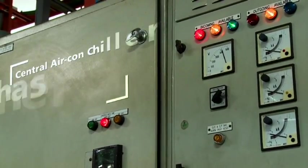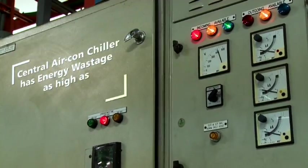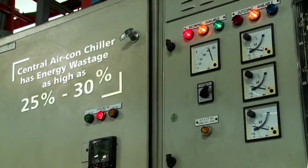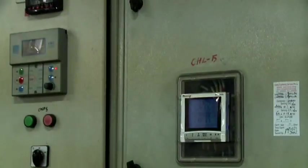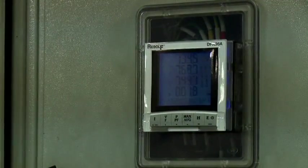For this reason, the central aircon chiller has great potential for energy wastage which can be as high as 25% to 30% depending on the frequency of the tube cleaning regimen.